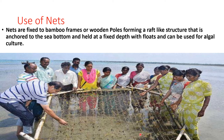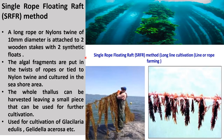One conventional method to cultivate macroalgae is the use of nets. These nets are fixed to a bamboo frame or wooden poles forming a raft-like structure that anchors to the sea bottom and is held at a fixed depth with a float, and can be used for algal cultivation.